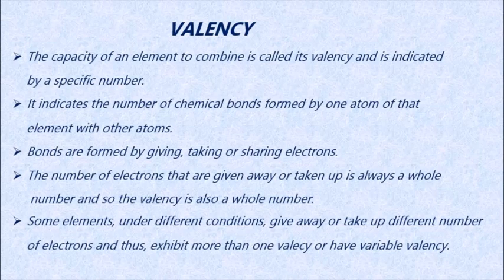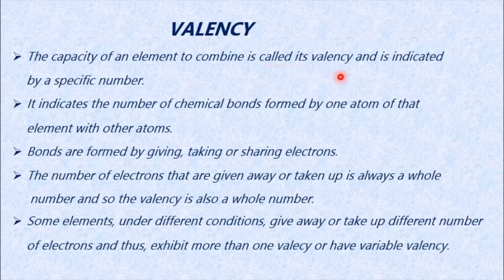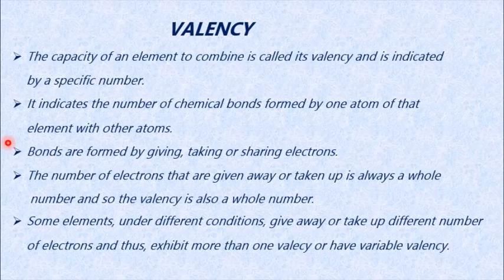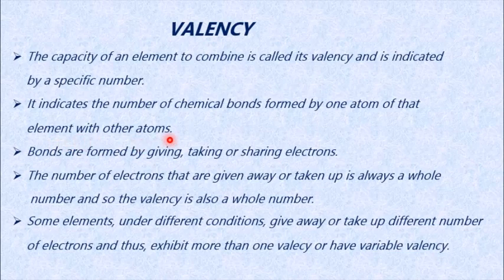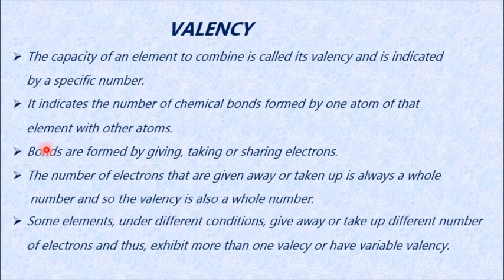Next is valency. The capacity of an element to combine is called its valency, indicated by a specific number for all elements. It indicates the number of chemical bonds formed by one atom of that element with other atoms. Bonds are formed by giving, taking, or sharing of electrons. For example, if atomic number is 3, two electrons are in the first shell and one in the next — that one valence electron is shared with someone else.